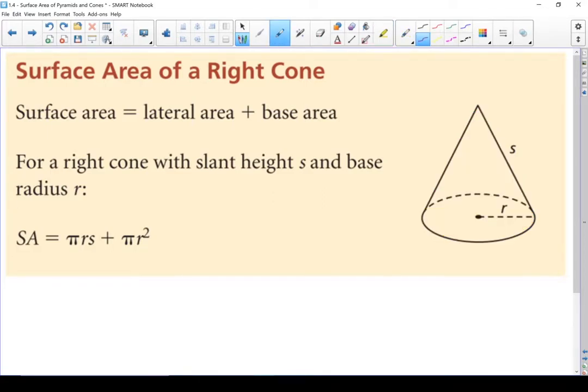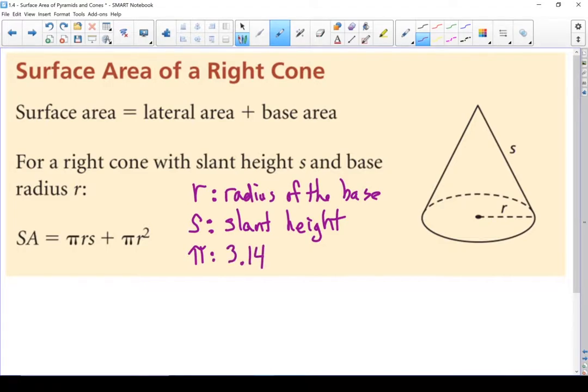Here we have the formula. A couple of variables that we should define. R is the radius of your base and S is your slant height. Pi? Well if you've got a pi button on your calculator use that. But if you don't, 3.14 is close enough.